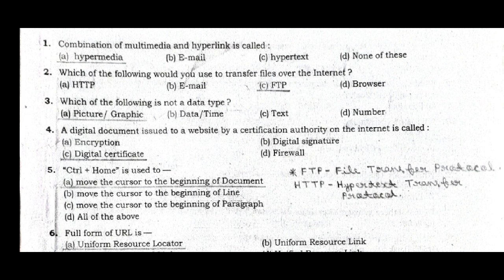Question 3: Which of the following is not a data type? Option A is the correct answer. Question 4: A digital document issued to a website by a certification authority on the internet is called — Answer C, digital certificate.